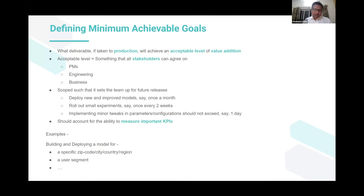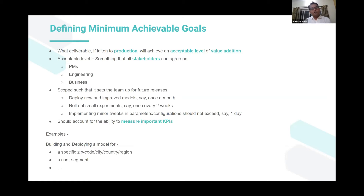Before going into the details of our architecture and deployment patterns, there's one thing I referred to earlier: the concept of a minimum achievable goal. In practice, we've seen that following the minimum achievable goal typically results in great execution, because it sets or freezes the scope. It becomes very easy for each and every person to understand what has to be done and what the goal is, making the entire process something that's set up for success. We've gone through multiple iterations over the last year to fine-tune this concept, but we define a minimum achievable goal as a deliverable which, if taken to production, achieves an acceptable level of value addition.